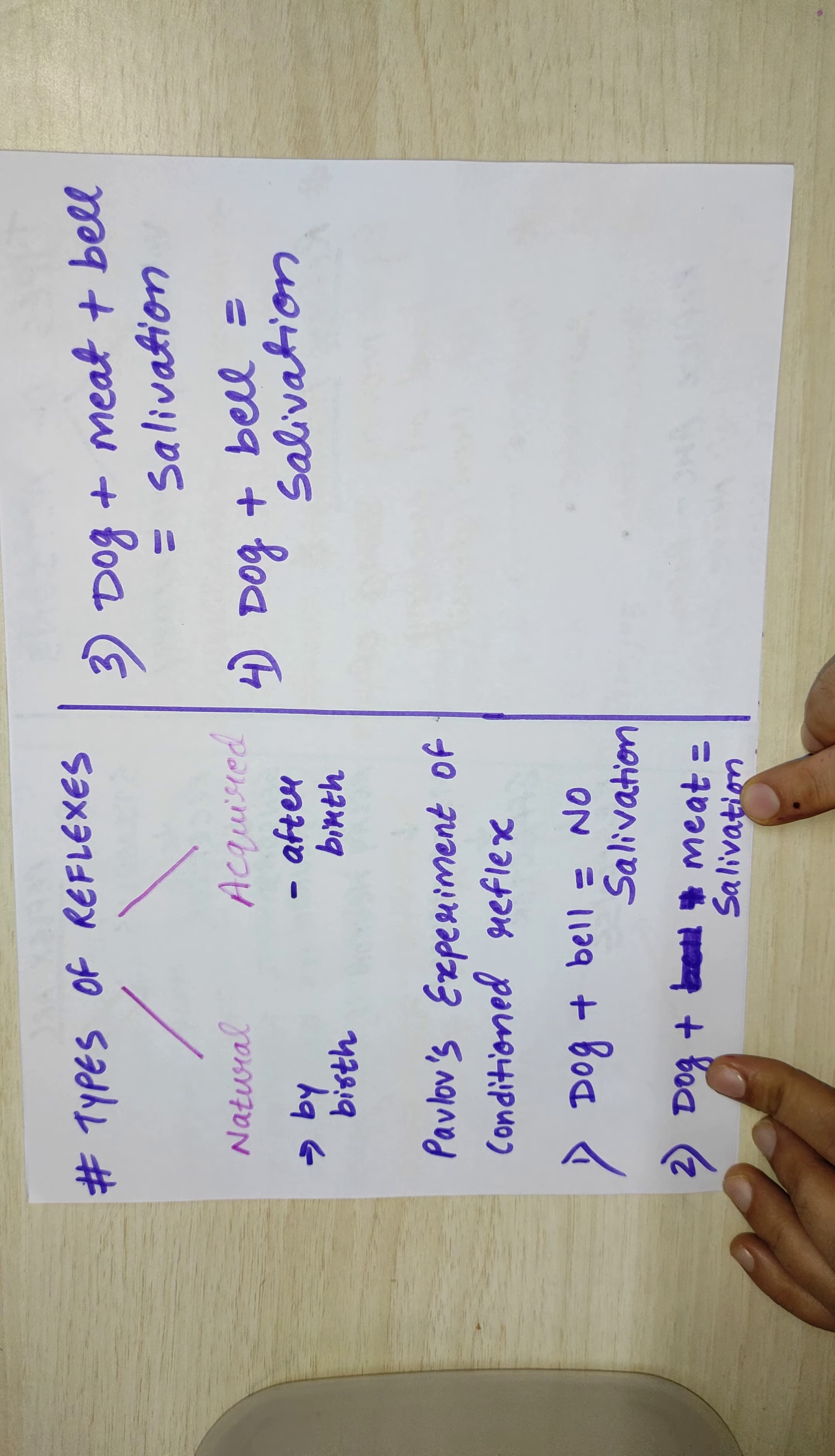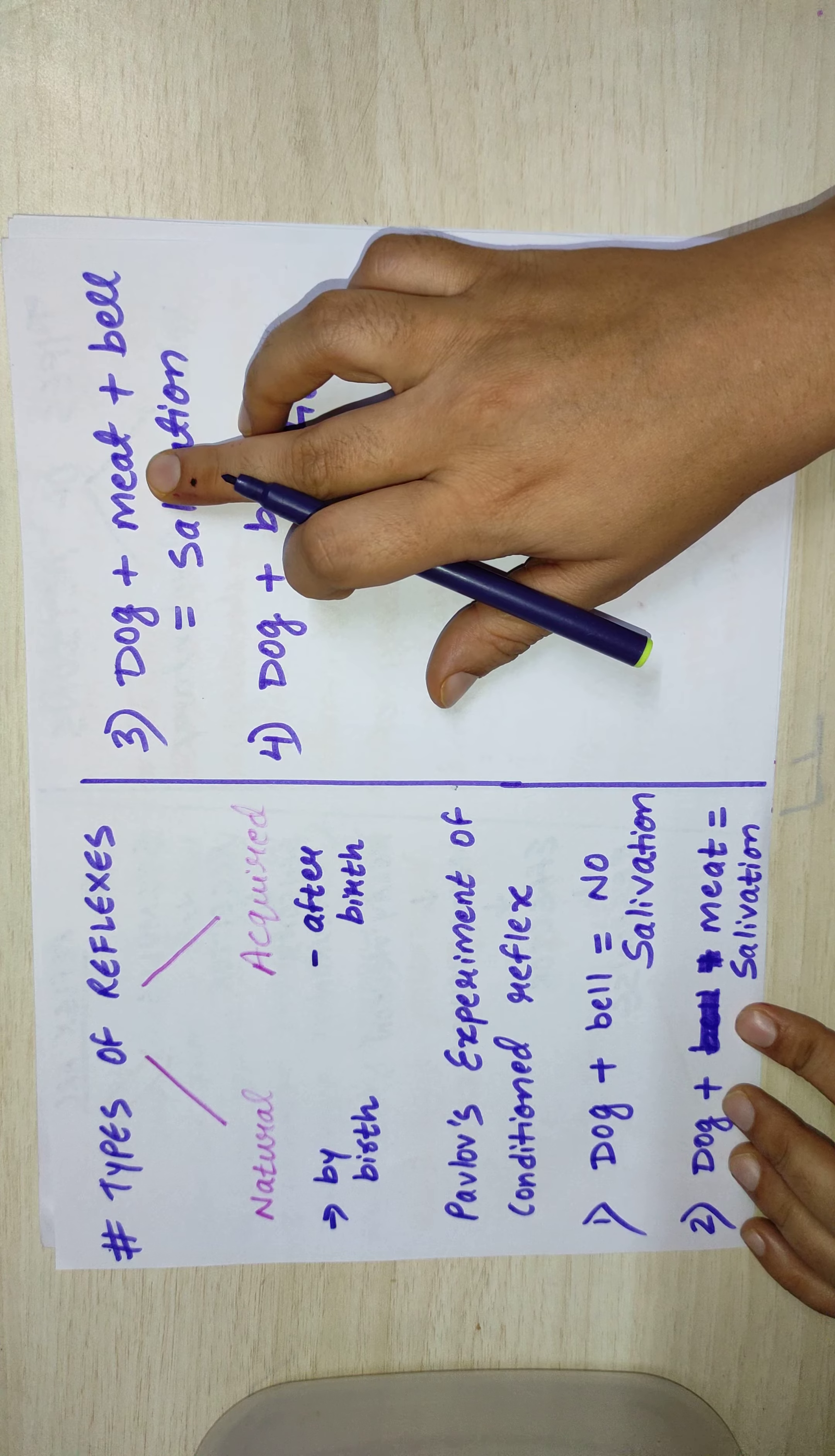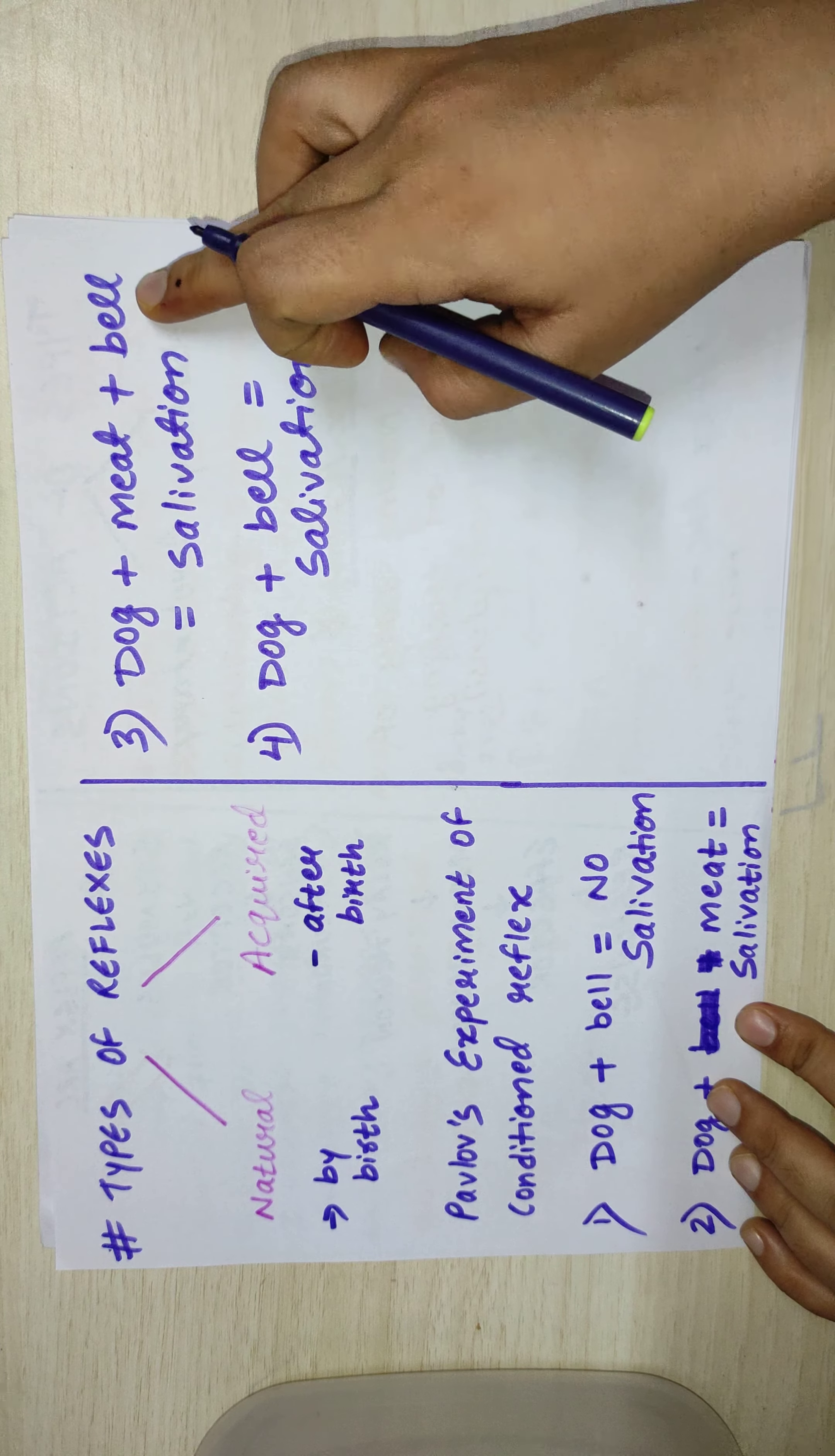He started salivation, means saliva came out of his mouth. Then in the third case, when the bell was continuously rung and the meat was also near the dog, salivation occurred. So now the dog thought that whenever the bell will ring, there will be meat.